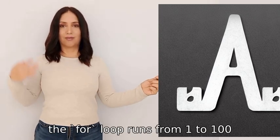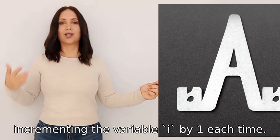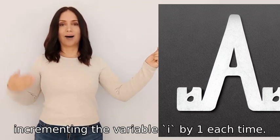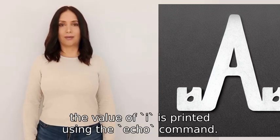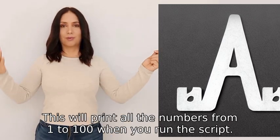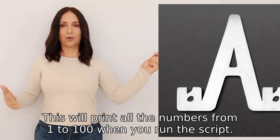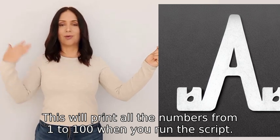In this script, the for loop runs from one to one hundred, incrementing the variable i by one each time. Inside the loop, the value of i is printed using the echo command. This will print all the numbers from one to one hundred when you run the script.